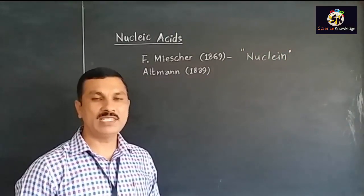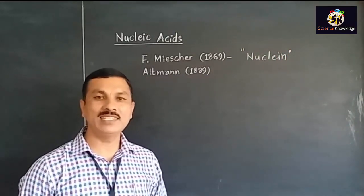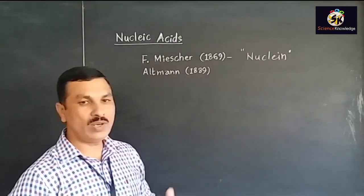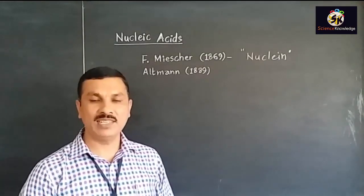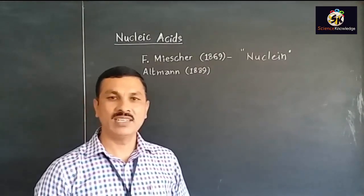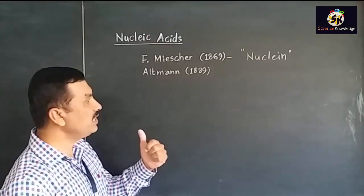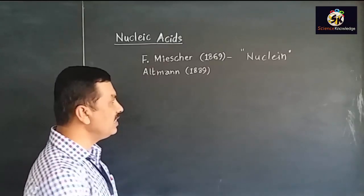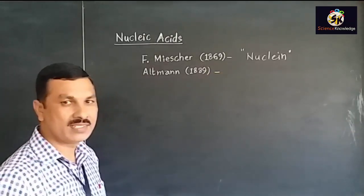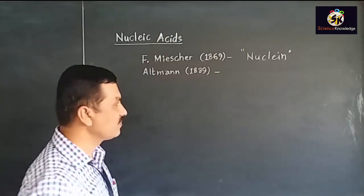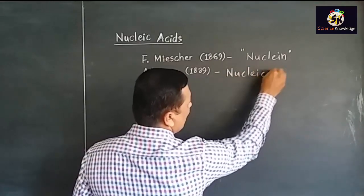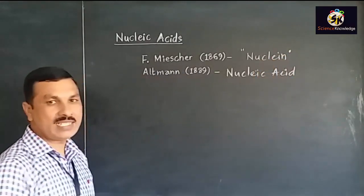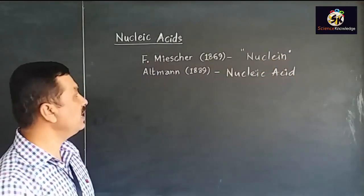Later on, with the progress of study and understanding, it became known that this molecule — Nuclein — consists of Carbon, Hydrogen, Oxygen, Nitrogen and Phosphorus. Altmann named the same compound, which is acidic in nature and which was identified from the nucleus, as Nucleic Acid. So the term Nucleic Acid was used by Altmann.